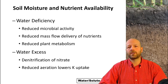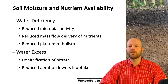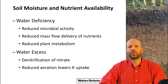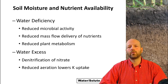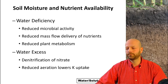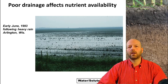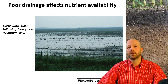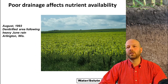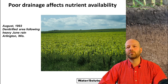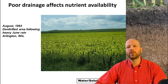The opposite of a water-deficient system would be having excess water, which is also a problem. We can have issues with denitrification of nitrogen or nitrate, so we'll be losing nitrogen that way. It also affects the aeration of the soil — with excess water there's very little air or soil gas — and so it can affect potassium uptake. Here's an example of a field that was flooded after a heavy rainfall in early June. This is the same field in August, and you can see that a lot of nitrogen was being lost, evident by the chlorotic corn crop.